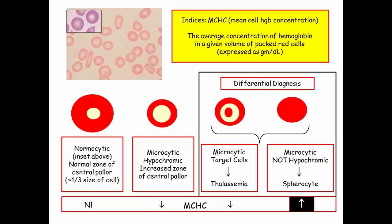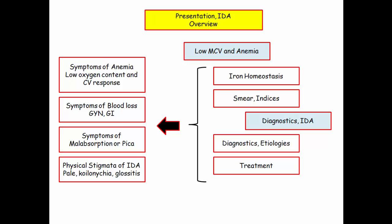So in iron deficiency anemia, MCHC is decreased. As for the boards, spherocytosis is probably the only condition you'll be questioned about that has an increase in MCHC. This will be further addressed in a later section of 12 Days in March. As for the diagnostic studies, the following information is the most important section for you to focus on, so go stretch your legs or grab a delicious piece of chocolate and let's forge ahead.